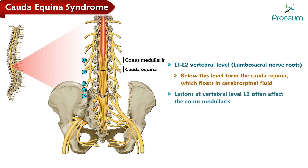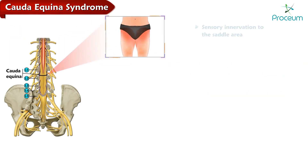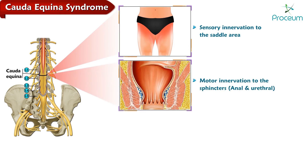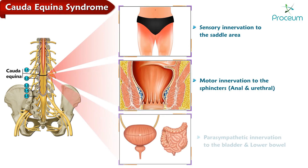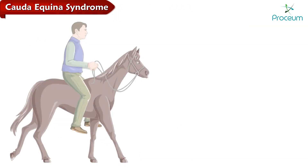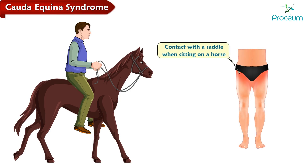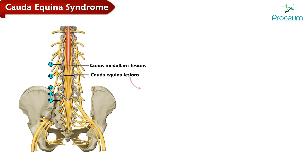Lesions at vertebral level L2 often affect the conus medullaris. The cauda equina provides sensory innervation to the saddle area, motor innervation to the sphincters — anal and urethral — and parasympathetic innervation to the bladder and lower bowel. The saddle region is the area of the body that would be in contact with the saddle when sitting on a horse, including the groin, the buttocks and genitals, and the upper inner thighs.